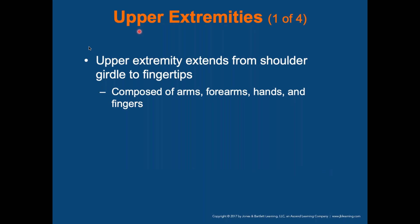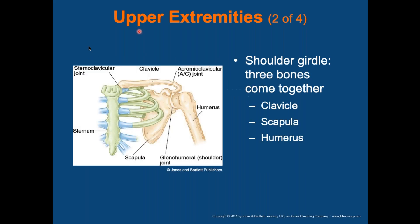The upper extremities include the arms, forearms, hands, and fingers — extending from the shoulder girdle to the fingertips. The clavicle is a very common sports-related injury; it fractures easily because there's no support underneath and it's under a lot of tension. It's connected by the sternoclavicular joint on one side and the acromioclavicular joint — the AC joint — on the other.